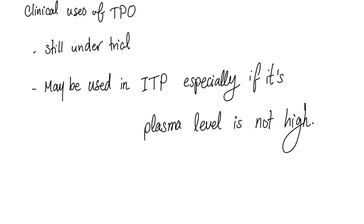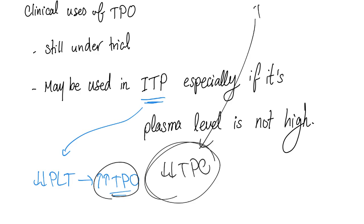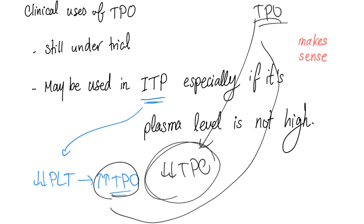Clinical uses of T-Po are still under trial. Theoretically, you may give it to patients with ITP, especially if the plasma level is not high. You would expect that in ITP, immunological destruction of platelets leads to decreased platelets, which increases T-Po via negative feedback. However, some patients with ITP can have low plasma levels of T-Po. For these patients, giving exogenous T-Po can help their symptoms by promoting megakaryocyte production and increasing platelet count.